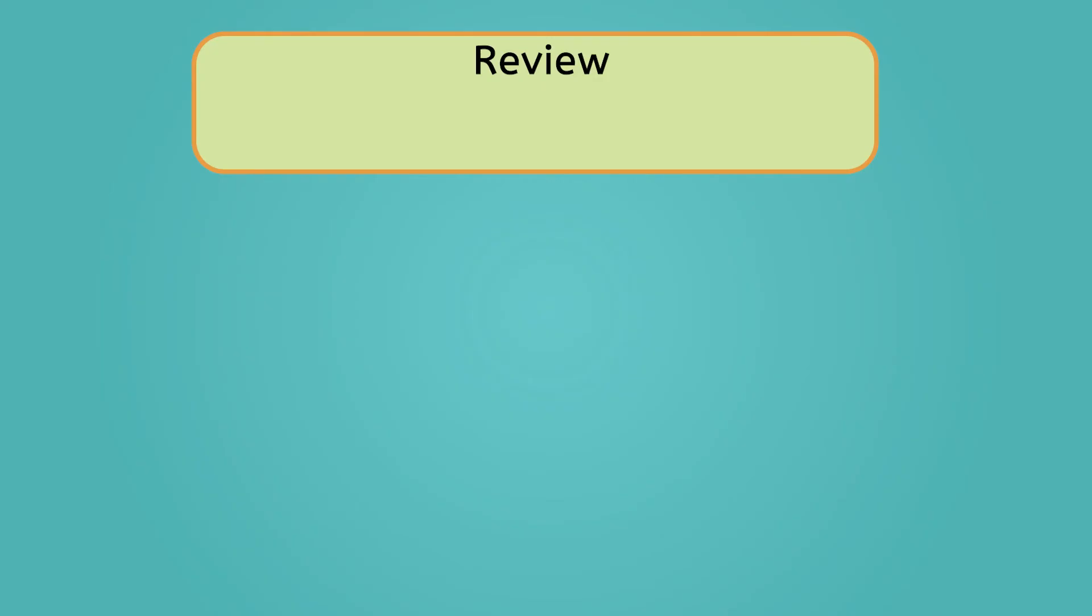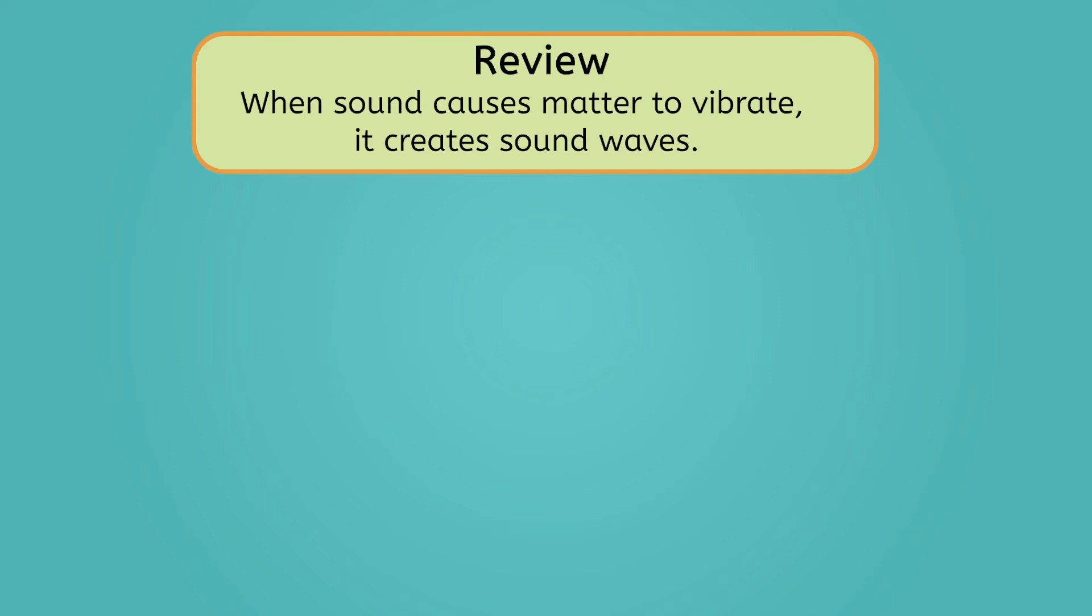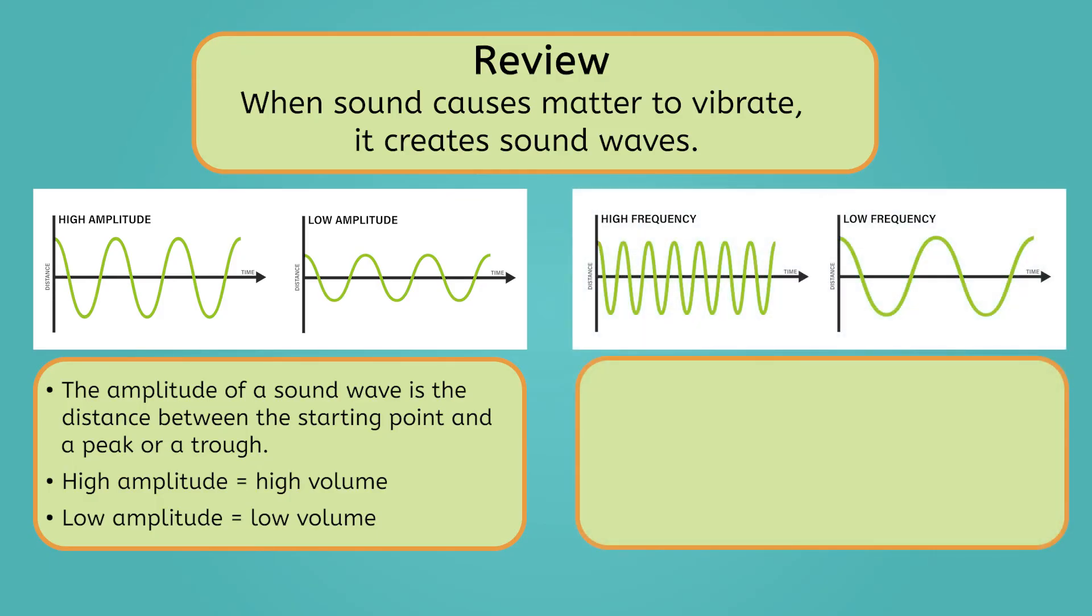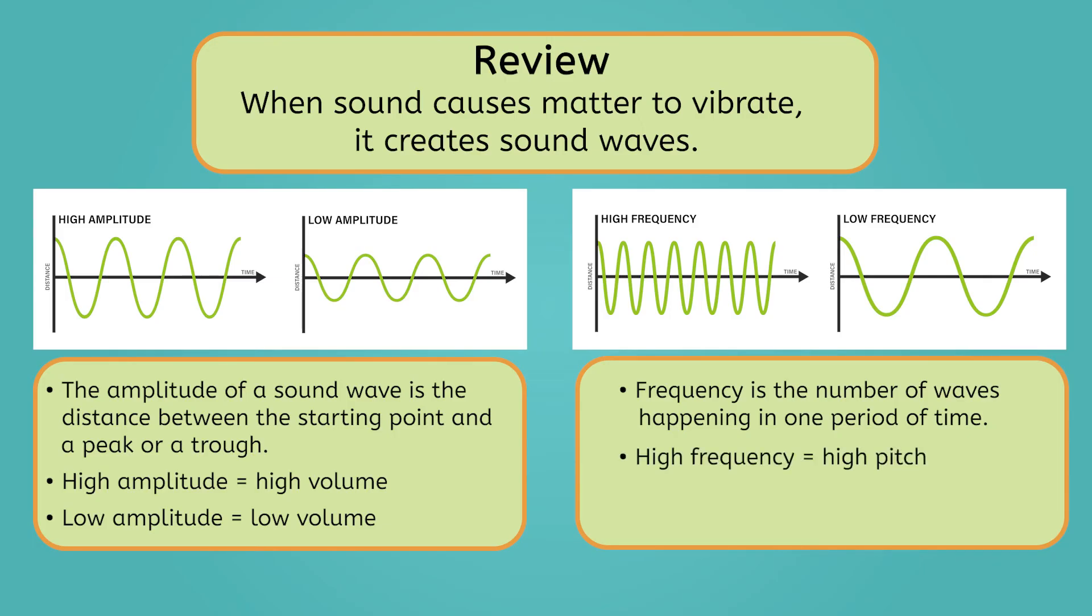Let's review everything we've learned about sound today. When sound causes matter to vibrate, it creates sound waves. The amplitude of a sound wave is the distance between the starting point of the matter moving and a peak or a trough. A high amplitude means the sound has a high volume, and a low amplitude means the sound has a low volume. The frequency of a wave is the number of waves happening in one period of time. The higher the frequency, the higher the pitch. The lower the frequency, the lower the pitch.